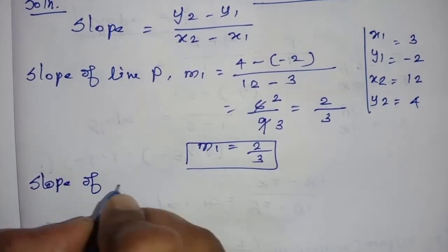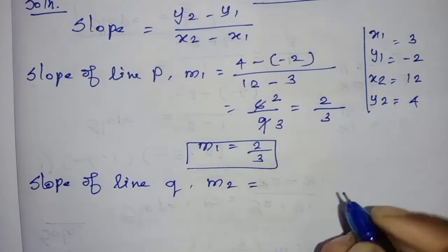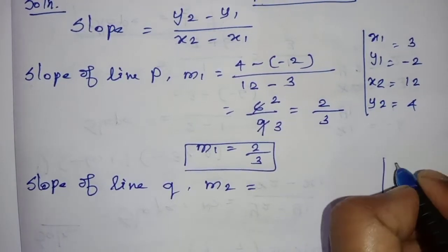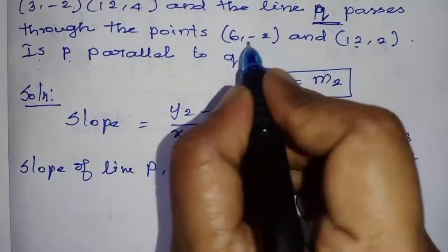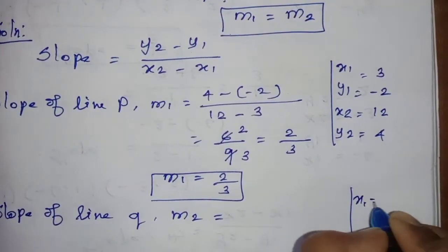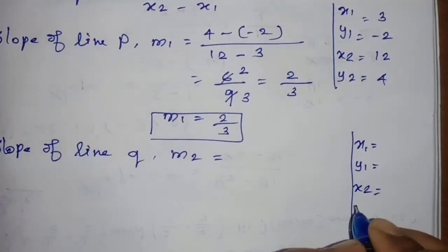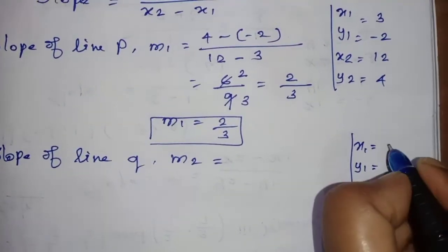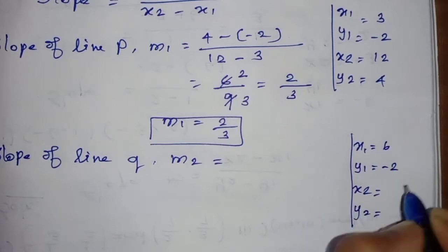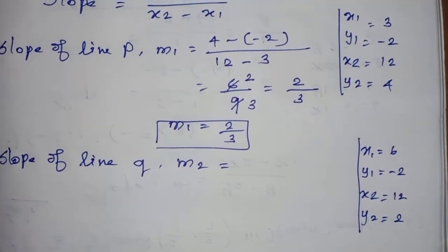Slope of line Q, that is M2. So these are the points: 6, minus 2, 12, 2. So x1, y1, x2, y2. So now x1 is 6, y1 is -2, x2 is 12, y2 is 2. Now substitute in the formula.